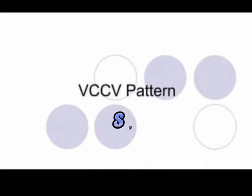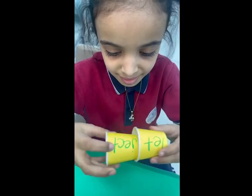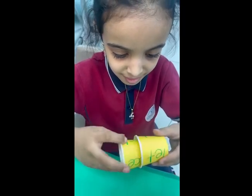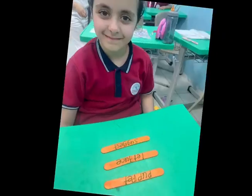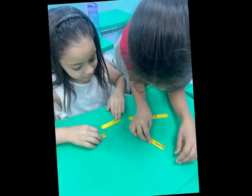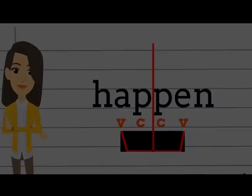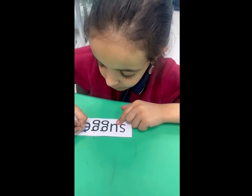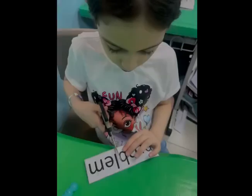Rabbit roll, rabbit roll, hop up and down to the rabbit roll. With two consonants stand between two vowels, divide the syllables between the consonants. Alright everybody, hop up and down to the syllables in the rabbit roll words.